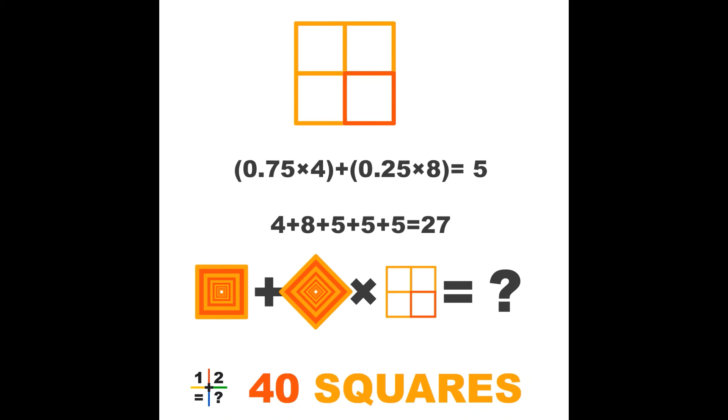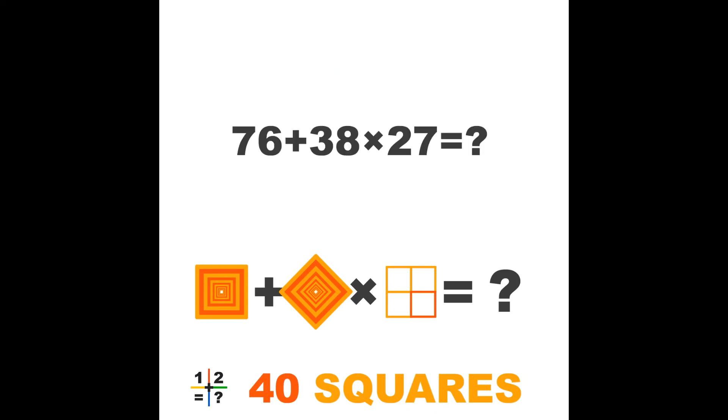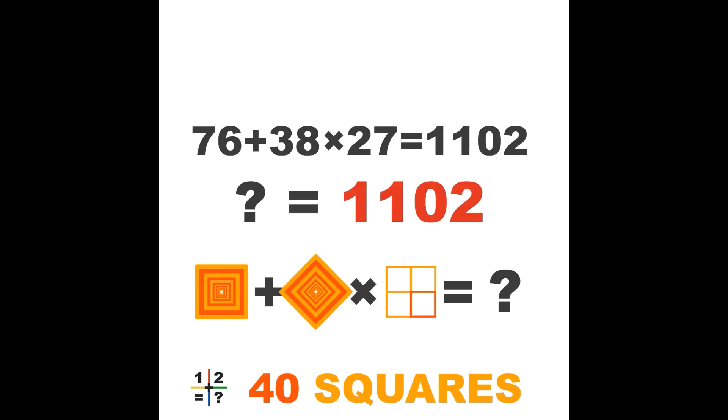Now we have determined the value of the objects of the last line. We can start to calculate the value of the question mark. 76 plus 38 times 27 equals our question mark. 76 plus 1026 equals 1102. 1102 is according to us the most logical answer of this 123 Puzzle Me puzzle.